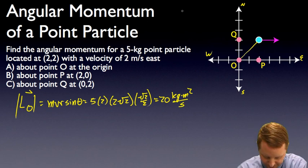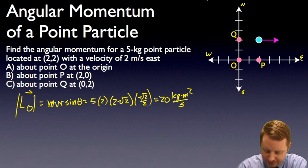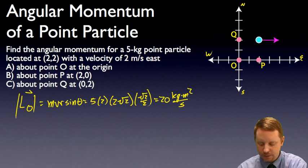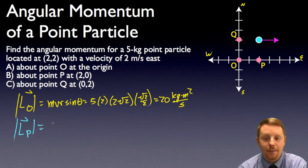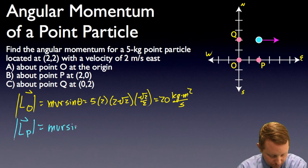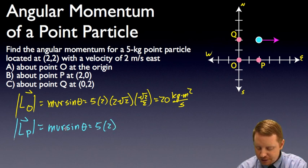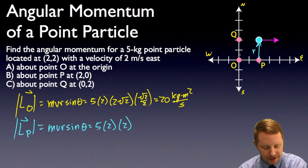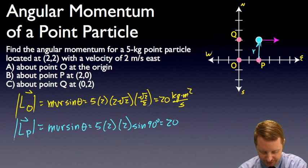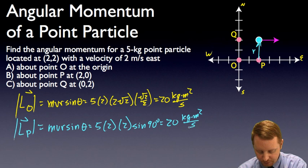Now let's find the angular momentum about point P at (2, 0). The magnitude of the angular momentum about point P is again m v r sine theta. Our mass and velocity haven't changed. The position vector from P to our object now has magnitude 2. The angle between r and the velocity vector is 90 degrees, so sine of 90 is 1. Once again, 5 times 2 times 2 times 1 gives 20 kilogram meters squared per second.